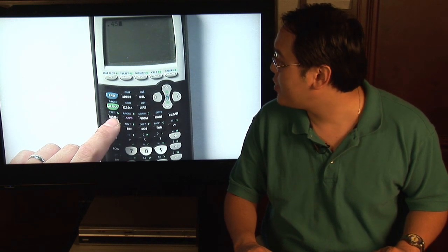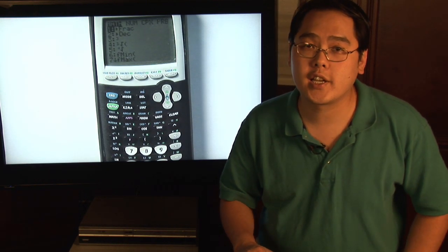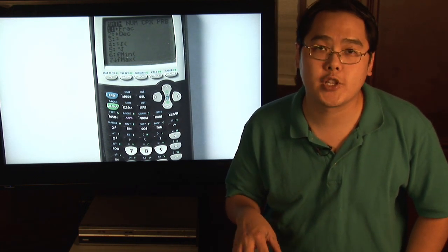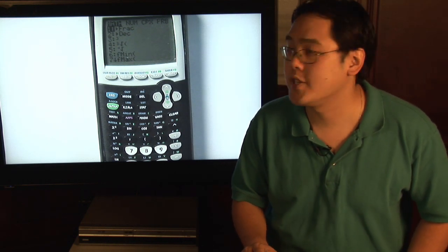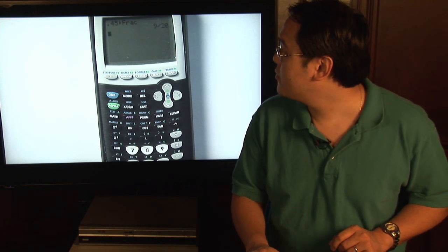On a graphing calculator — if you have a Texas Instruments model, for example — press the math button. You'll see that the very first option is FRAC, which means it will convert the decimal you entered into fraction form if possible. You can do it two ways: press the number 1 since it's the first option, or because it's the very first option, press the enter button. Whichever way you choose, it will convert the decimal into fraction form. Pressing it will tell you that 0.45 is 9/20ths in lowest terms.